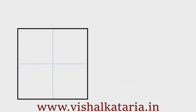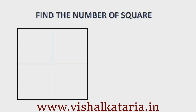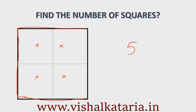Let's start with an example. Here in this figure, this is a 2 by 2 square grid. If I ask you to find the number of squares in this grid, the answer is very simple — you can easily count. There are four smaller squares and of course there is one big square, so in this case the total number of squares is 5.